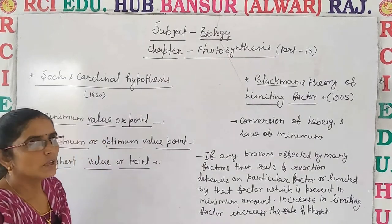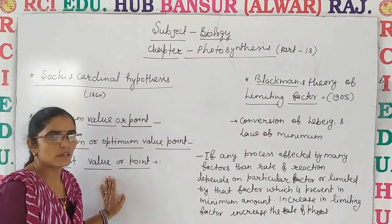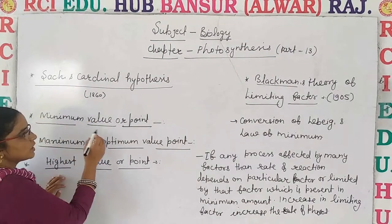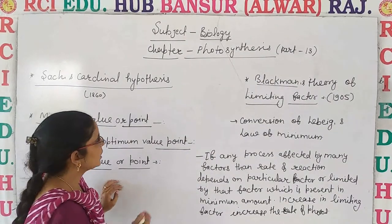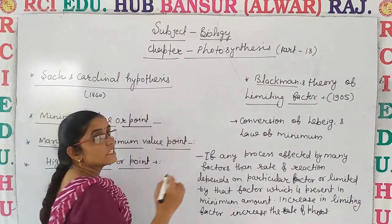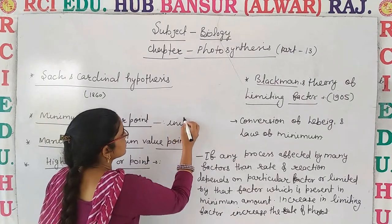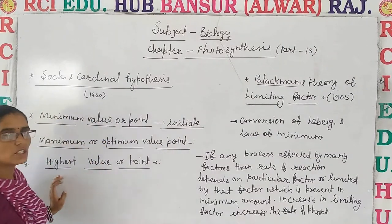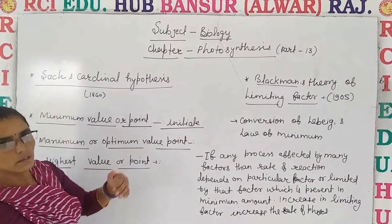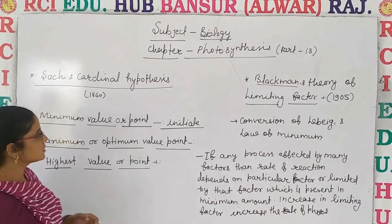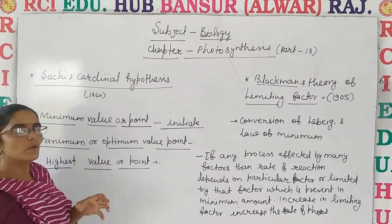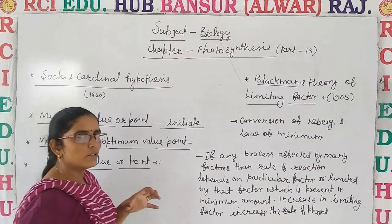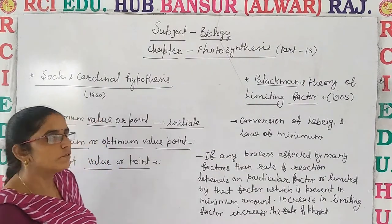According to him, there are three main values of the factors which affect the rate of photosynthesis. First, the minimum value or minimum point — it means the amount of factor which initiates the rate of photosynthesis, i.e., the minimum value of that factor which starts photosynthesis.